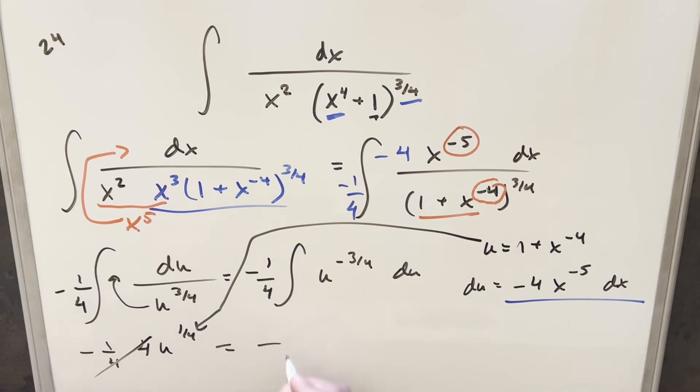So for my final solution, we'll have this minus sign up front. I'm going to write this as the 4th root of our u value, 1 plus x to the minus 4, add a plus C, and that's it.